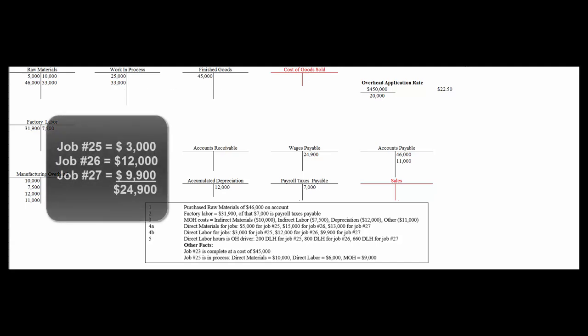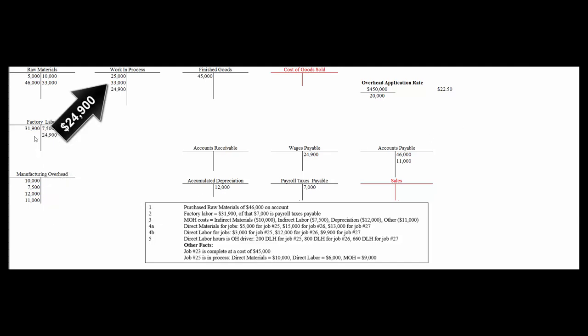Now let's move over labor. Looking at the time cards, job 25 had $3,000, job 26 had $12,000, and job 27 had $9,900 of direct labor. That's a total of $24,900 coming out of factory labor and going into work in process. So now we've got materials and labor in work in process — all we have to do is move the overhead.